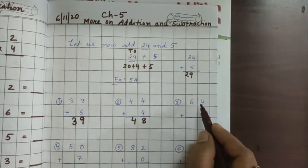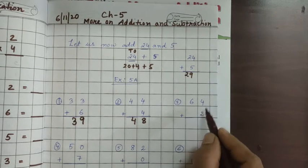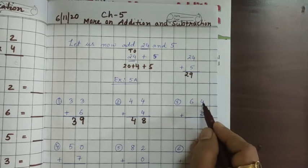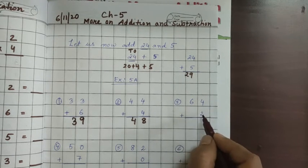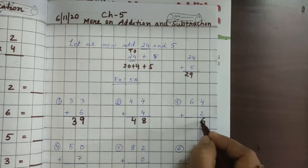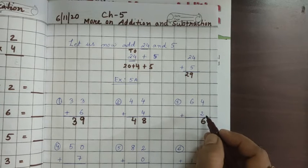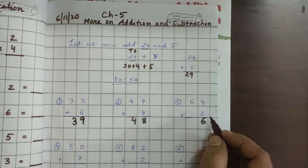Next one you see that 64 plus 2. That means 6 tens plus 4. So 4 keep it in your mind, 2 you count: 4, 5, 6. We are counting forward. When we are adding we are counting forward.